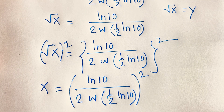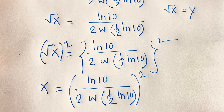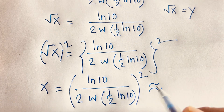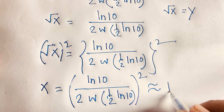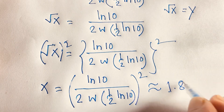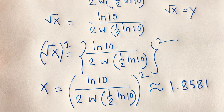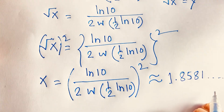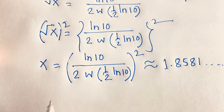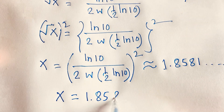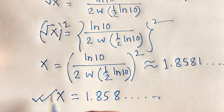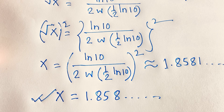If you use a calculator for this, you find that [ln(10)/2 / W(½·ln 10)]² equals approximately 1.858. So x = 1.858. This is the value of x. Thank you all — if you enjoy this video please subscribe to my channel for other interesting videos. Goodbye, take care.